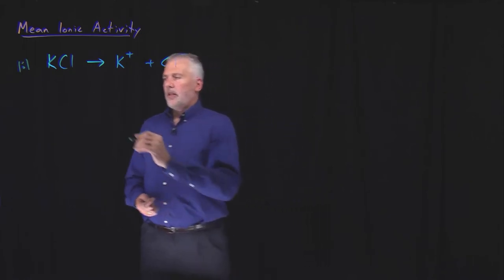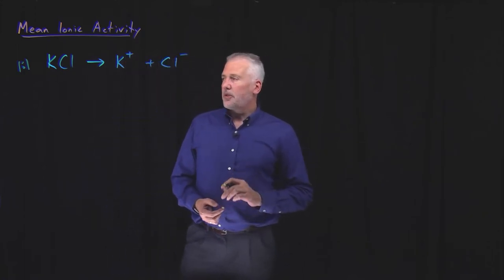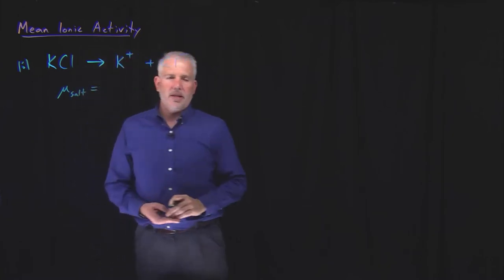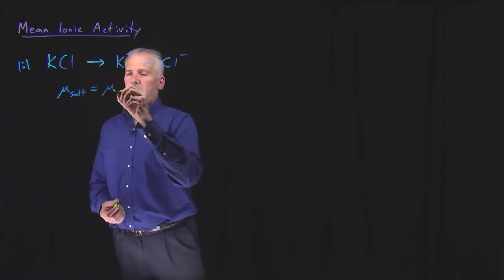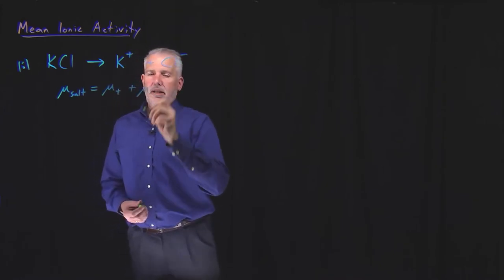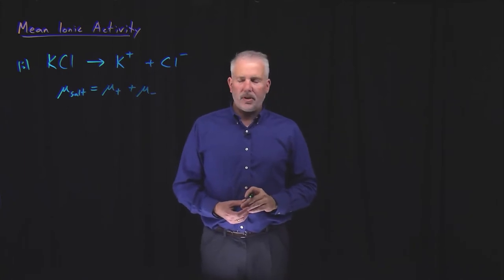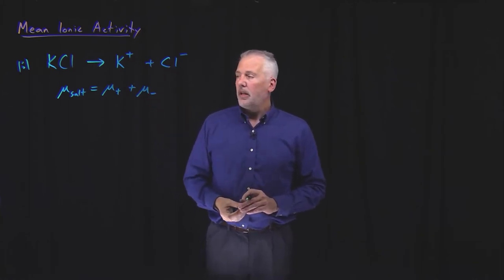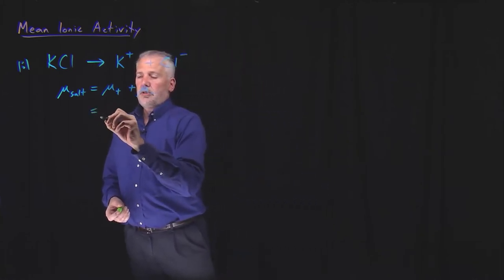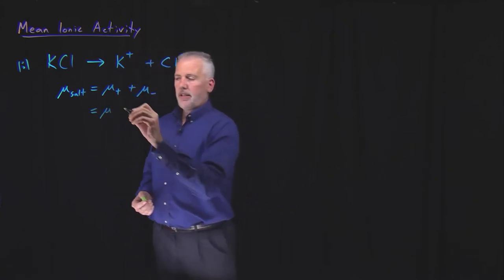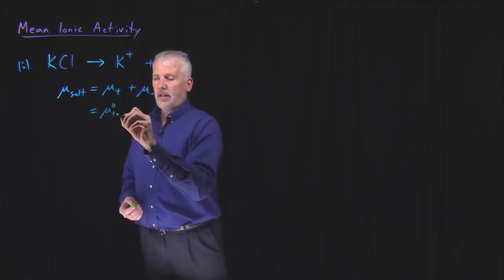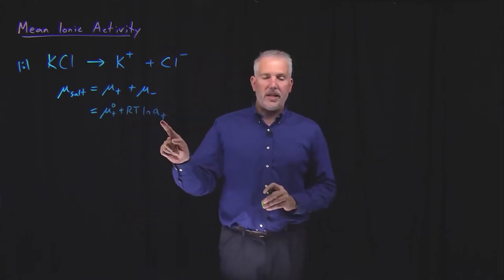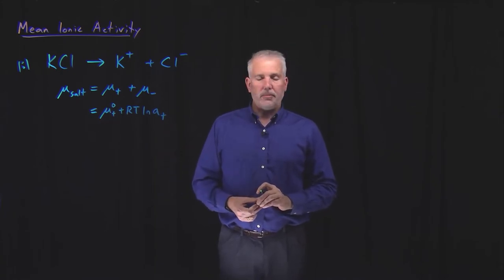As we begin to think about activities and thermodynamics of these solutions, if we're interested in the chemical potential of the salt, we can think of that as the chemical potential of the cation and the anion added together. We know that in solutions, the chemical potential of a component can be written as the standard chemical potential plus RT times the natural log of the activity.